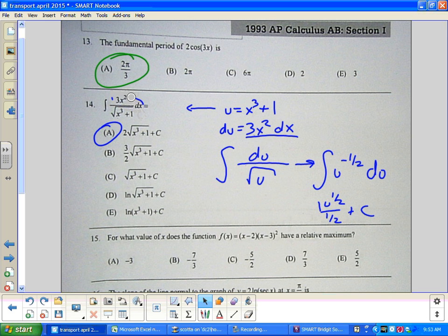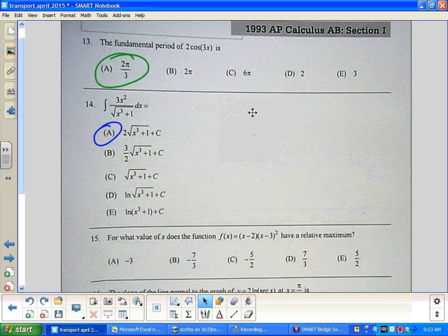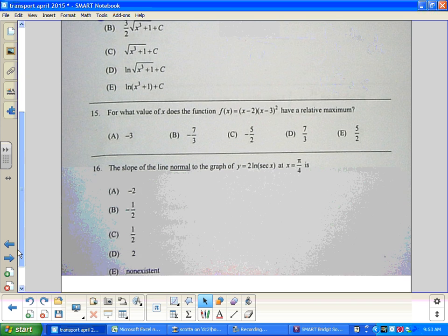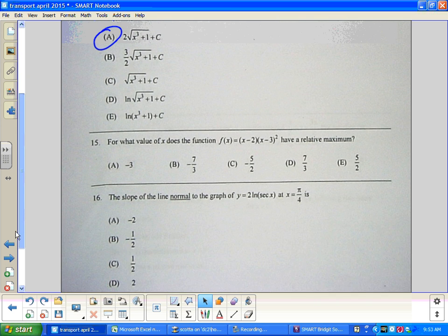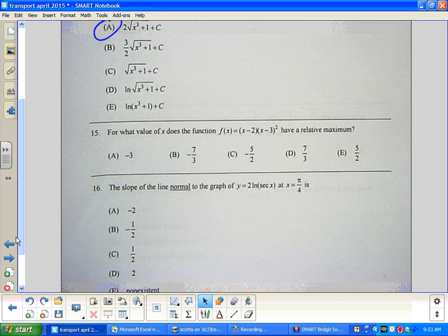That is the answer. So again, 2 problems. Hopefully just a minute. So we're trying to work our head here, trying to always get ahead. Problem 15. For what value of x does the function f(x) equal (x-2) times (x-3)² have a relative max? So I'm going to do the first derivative here. And I'm going to do the product rule.